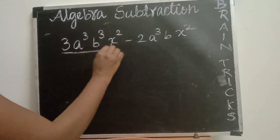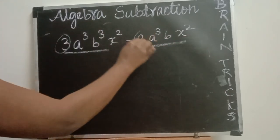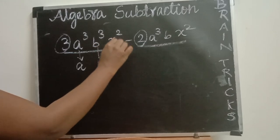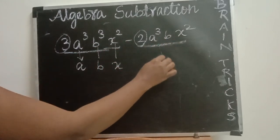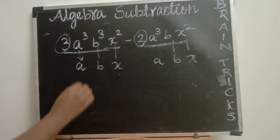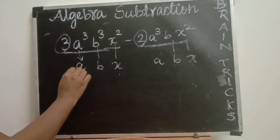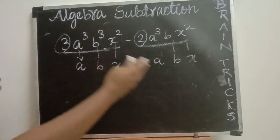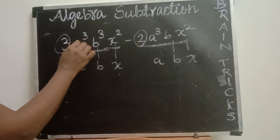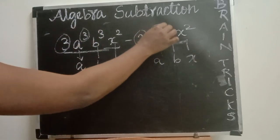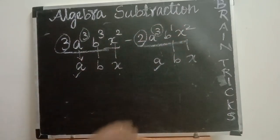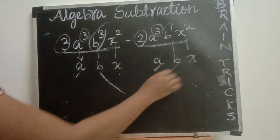Next example: two terms, each a numerical value times variables. Check the variables: the first term has A, B, and X; the second term also has A, B, and X — so variables are the same in both terms. Now check the power of every variable. A has power 3 here, and power 3 here — same. Next, B has power 3 here, but B has power 1 here — B is not the same.